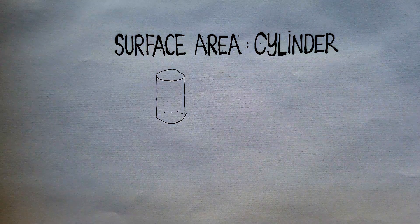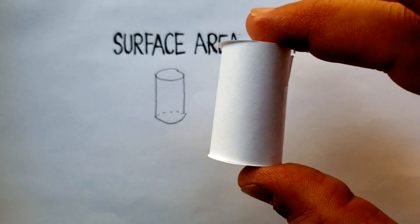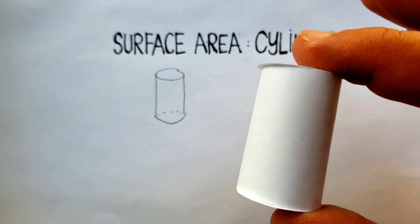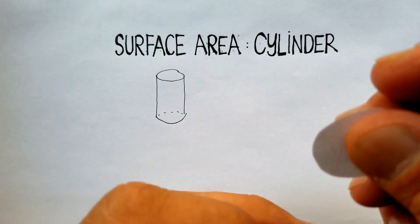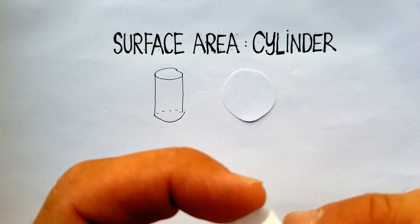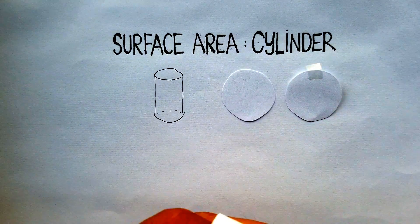Let me go back to this little makeshift cylinder that I made. So here's my cylinder, which pretty much looks like that. If I just take the top part off, I have a circle. Take the bottom part off, I have another circle.